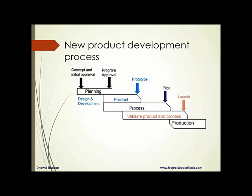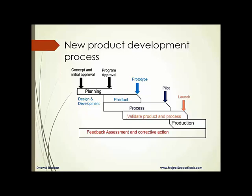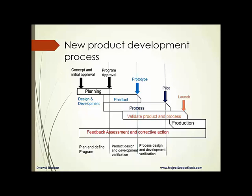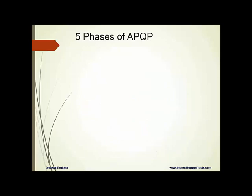These are the four important steps, and the fifth, which runs in parallel once the product goes to production, is feedback, assessment, and corrective actions. You monitor all four processes and take corrective actions. In terms of time: first is plan and define program, then product design and development verification, then process design and development verification, then product and process validation — and throughout all those phases, you have feedback and corrective actions.